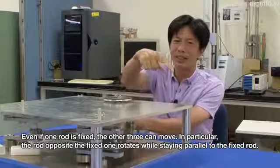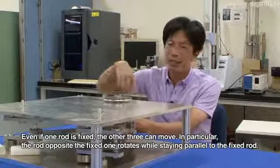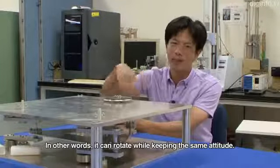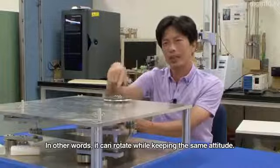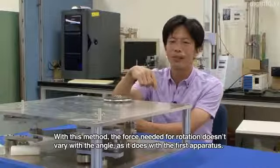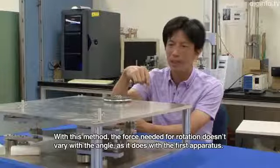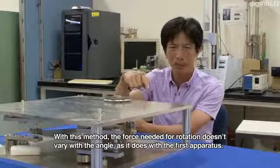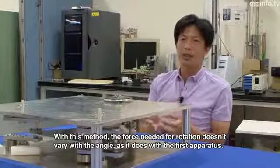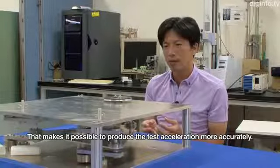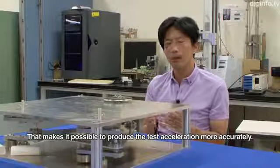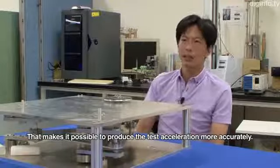The parallel link mechanism uses rods in a crisscross pattern, where four axes are all connected with circular joints. If you fix one side and rotate the other side, it can spin while always maintaining the same posture. Using this, the weight doesn't change and it maintains posture while rotating, so you can efficiently apply sine waves to multiple axes simultaneously without changing the weight.